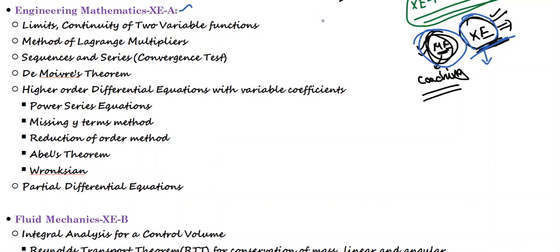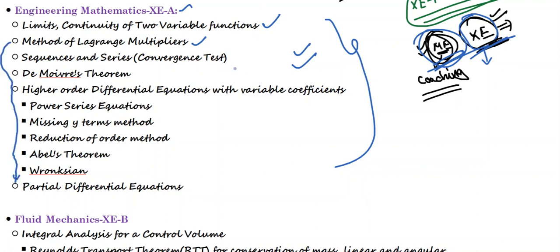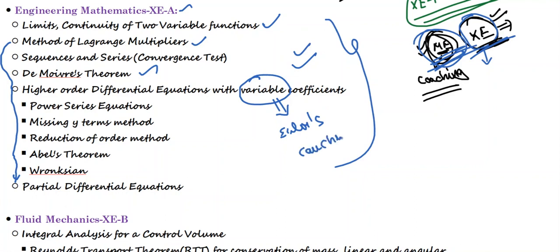In engineering mathematics, these are the extra topics apart from ME: limit and continuity of two-variable functions (new topic), method of Lagrange multipliers — which comes under partial differential equations but is mentioned separately in the syllabus — sequences and series convergence tests, which were in ME but not very deep, so we'll cover more examples. Also the Abel's theorem, and then higher-order differential equations with variable coefficients.